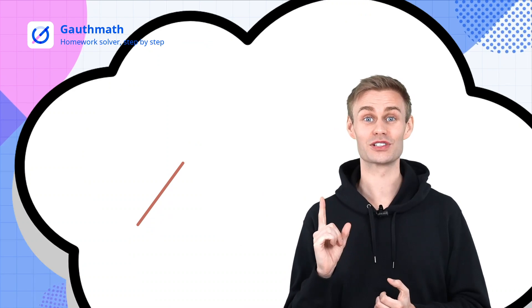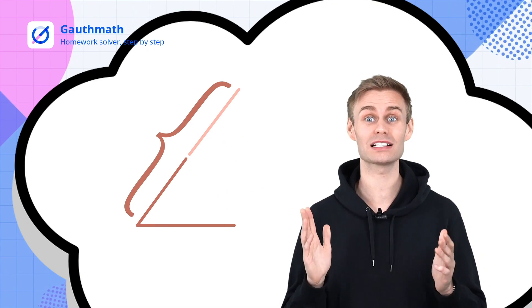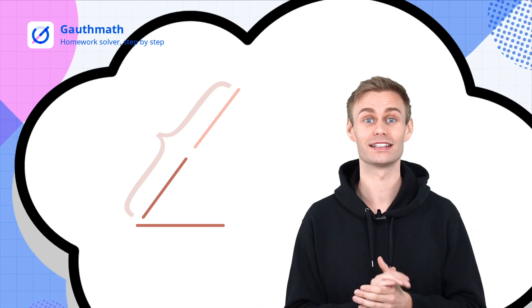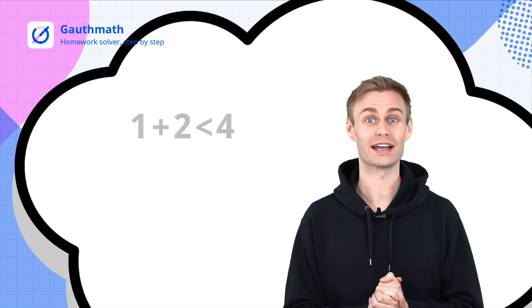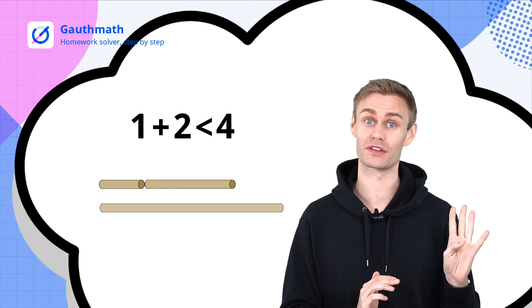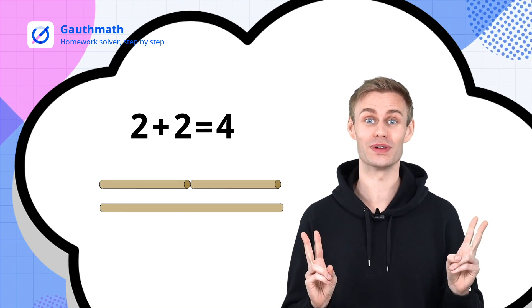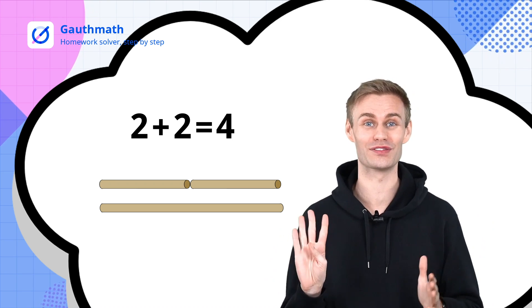The first constraint is that the sum of the lengths of any two sides must be greater than the third side. That's why we fail at the beginning. One plus two is smaller than four. And two plus two equals four, but not greater than four.